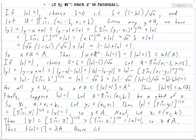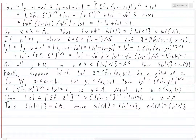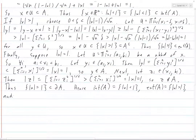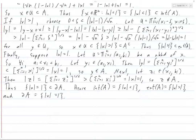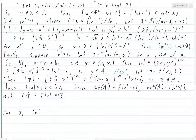The interior of A equals the set where norm of x is less than 1. The exterior of A equals the set where norm of x is greater than 1. And the boundary of A equals the set where norm of x equals 1.